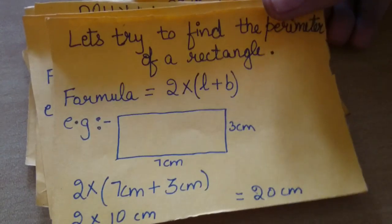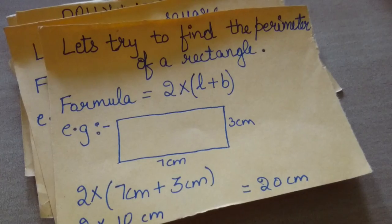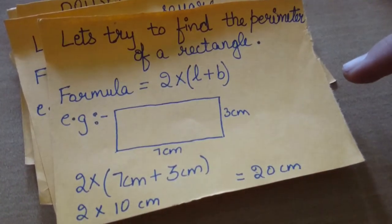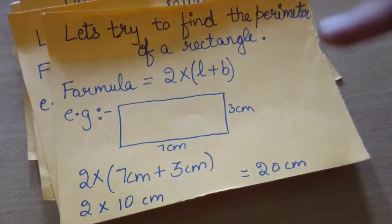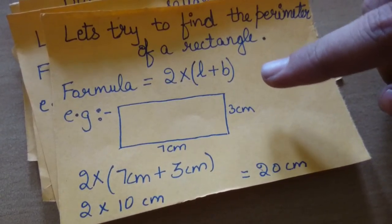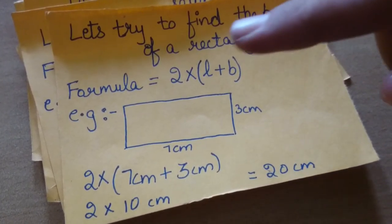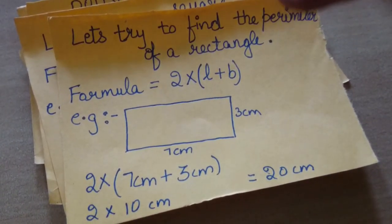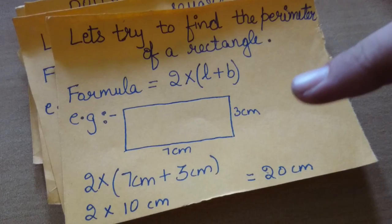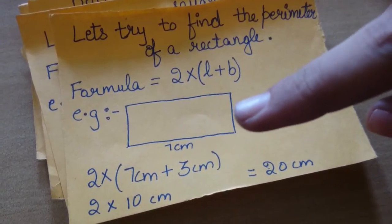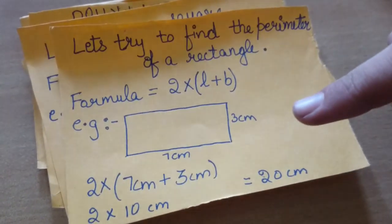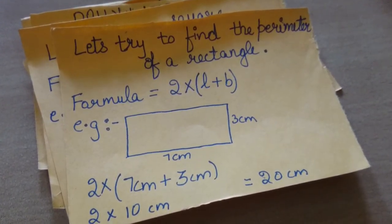Now, let's try to find the perimeter of a rectangle. Its formula is 2 times length plus breadth. Let's take an example. One side of the rectangle is 3 cm and the second 7 cm. So, 2 multiplied by 7 cm plus 3 cm, that is 2 times 10 cm which equals 20 cm. And 20 cm is the perimeter of the rectangle.